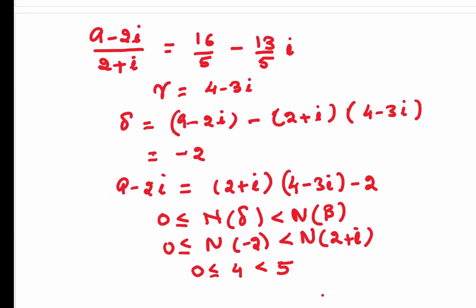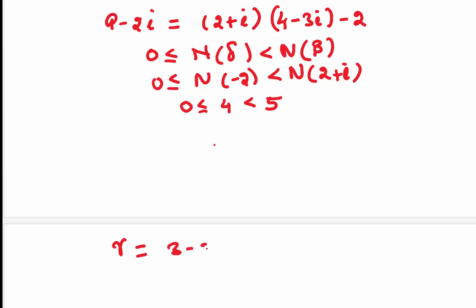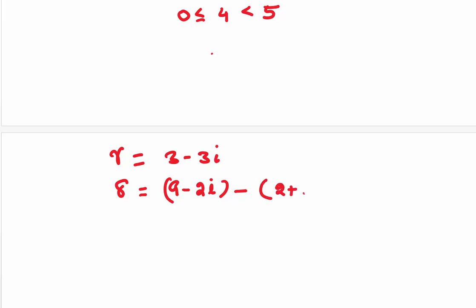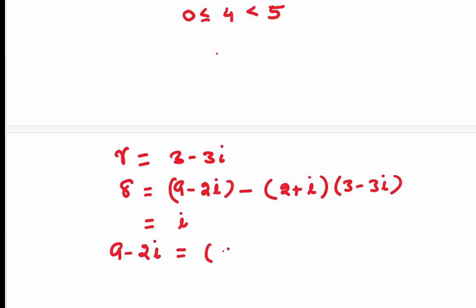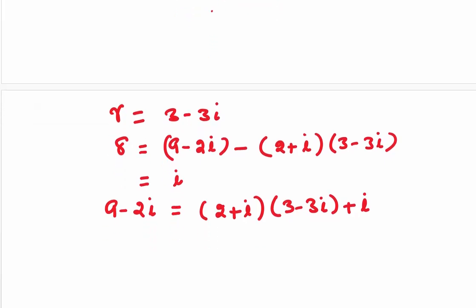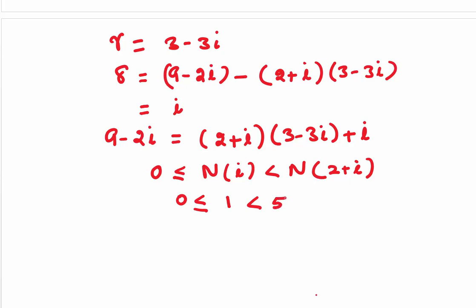Here is yet another way of writing 9 minus 2i. If we take gamma to be 3 minus 3i, then delta equals 9 minus 2i minus (2 plus i)(3 minus 3i). When you simplify, you get delta equals i. So 9 minus 2i equals (2 plus i)(3 minus 3i) plus i. Simplifying the right-hand side gives 9 minus 2i. Checking the condition: norm of i is 1, which is less than norm of (2 plus i) which is 5, so this also holds.